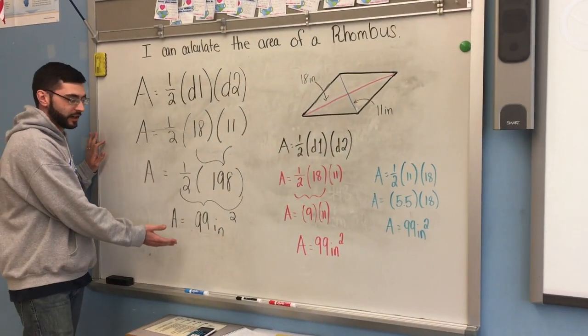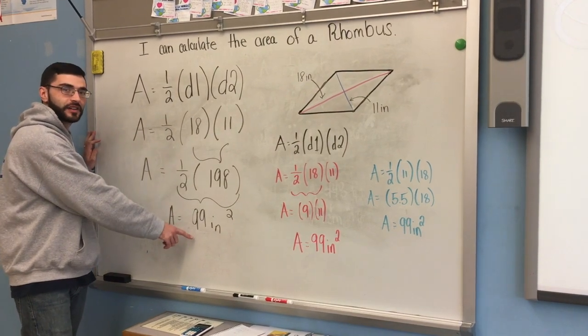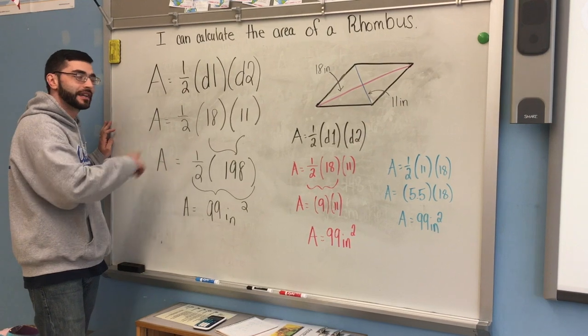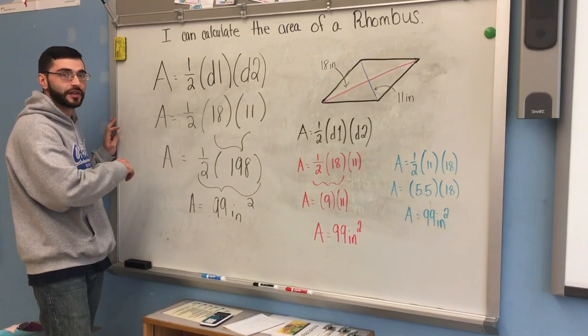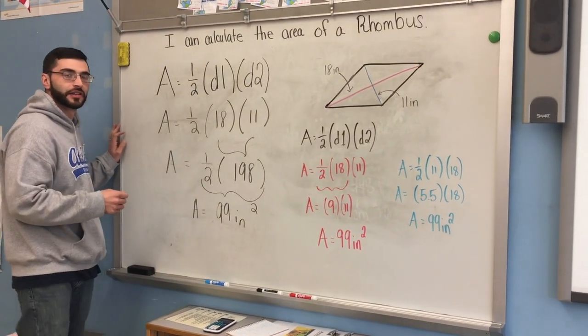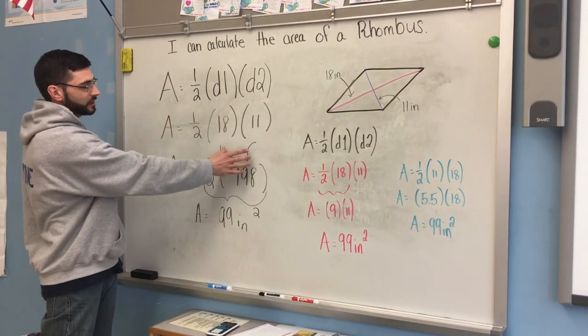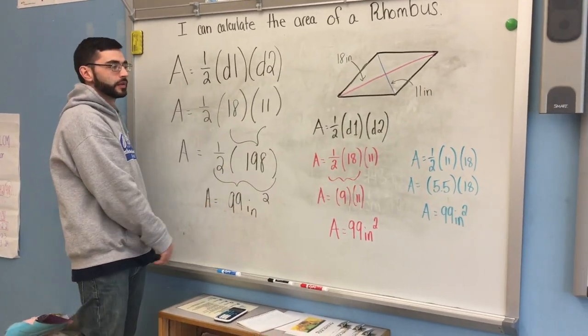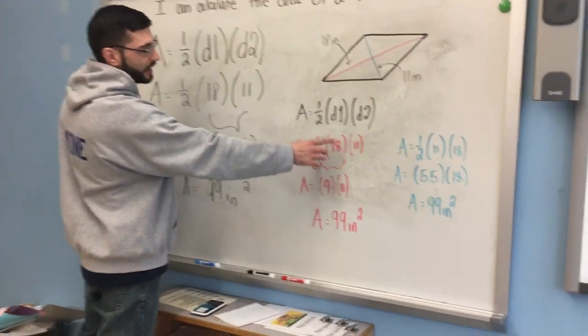So we have Ms. Colberto's work here and we did see that she did get the area of 99 inches squared. But if you did notice, just like how last lesson there's more than one way we can solve, same thing with the rhombus. There is another way that we can solve. So here Ms. Colberto multiplied first and then divided by two. But if you would like to, what I did here, I set it up. But I started by dividing by two.